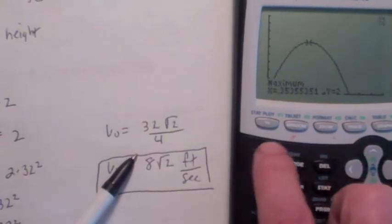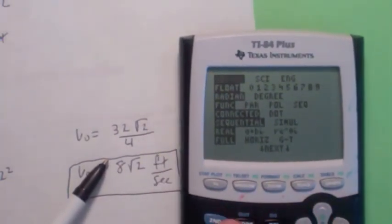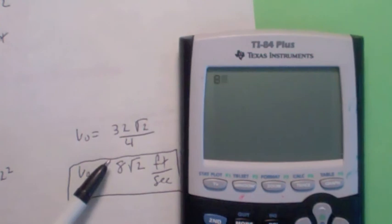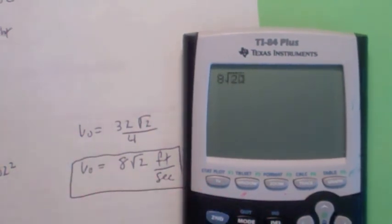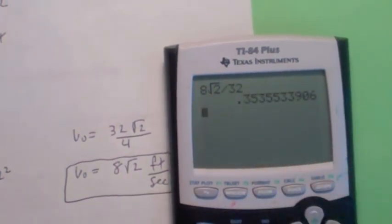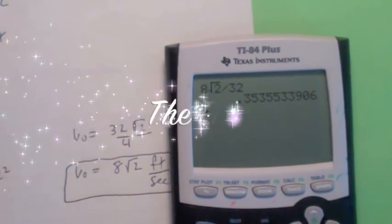So if you take 8 square root of 2. Let's see if that's right. If you take 8 square root of 2, 8 times the square root of 2, and you divide that by 32. There you go. You get 0.353. All right. We got to go. Bye-bye.